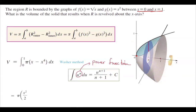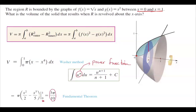Applying the power rule, the integral becomes π [x²/2 − x⁵/5] evaluated from 0 to 1. Plugging in 0 gives zero, so we only evaluate at 1. Using the Fundamental Theorem of Calculus, we get π(1/2 − 1/5) = 3π/10. This is the volume of the solid.